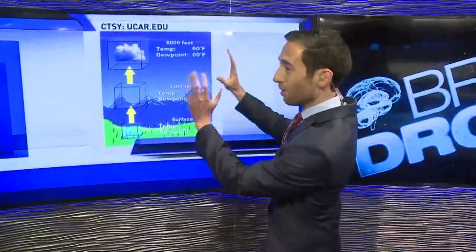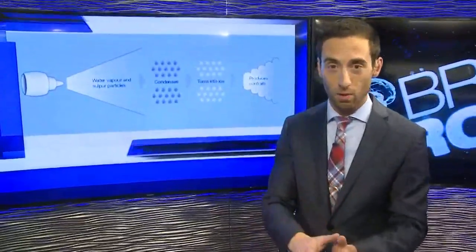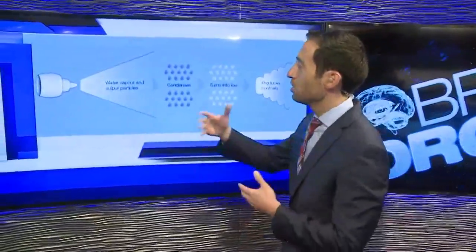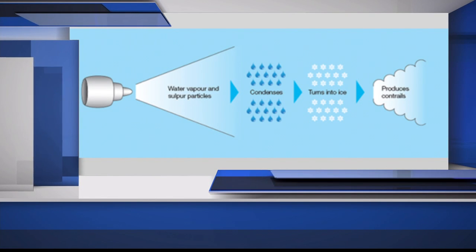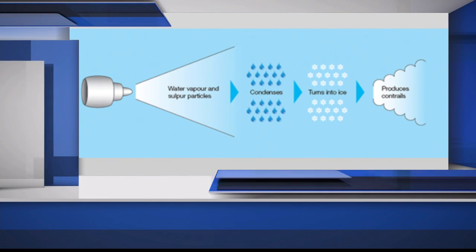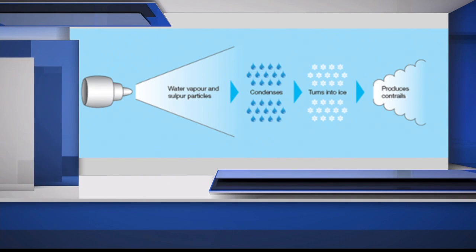So that's how a cloud forms, which makes it a lot easier to understand how a contrail forms. Jet engines exhaust vapor — the number one exhaust of a jet engine is water vapor. There are also particles in there; some of them are sulfur particles, which is important because that's something for the water vapor to cling onto.